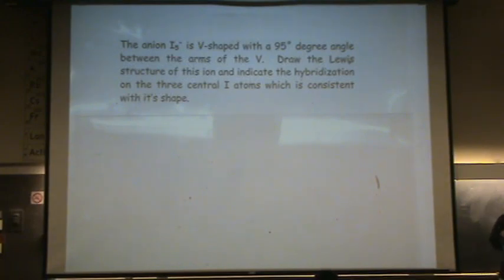We know, according to the question, it's V-shaped. So when we draw the Lewis structure, we better get a V or you messed up. You can't get a circle or an X or whatever. It tells us the angle, but that's not really relevant for us. We just want to draw the Lewis structure.